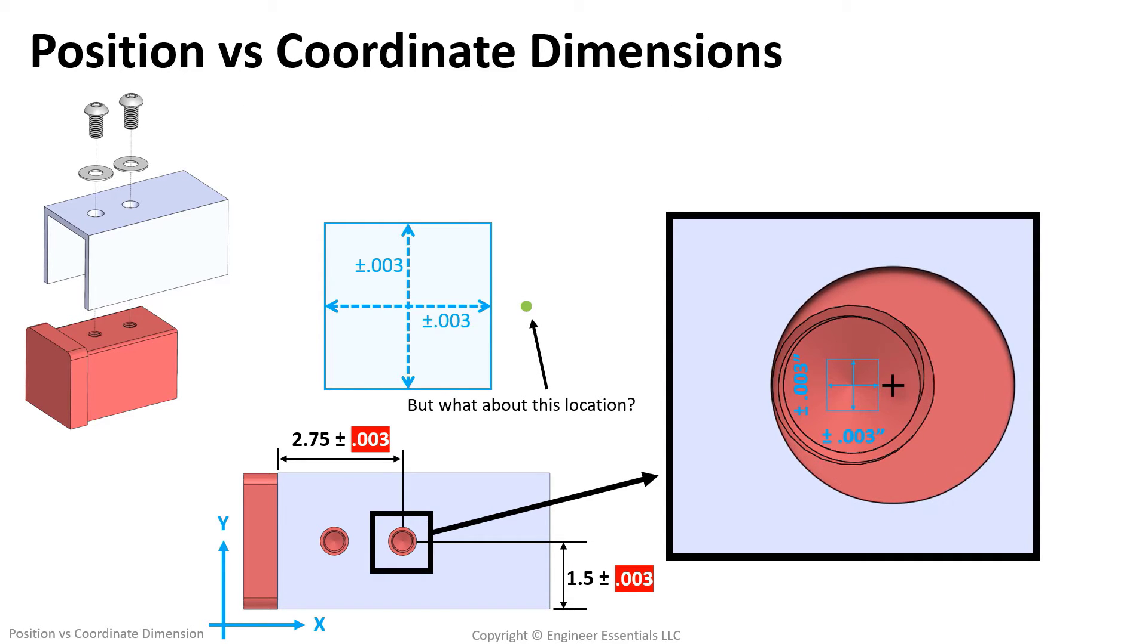But does this require quality to reject usable parts? We just saw that if a part deviates in four thousandths in X only, and has no deviation in Y, the part will fit up with no interference. Technically, if this did happen in the real world, we would have to reject these parts due to our tolerances.